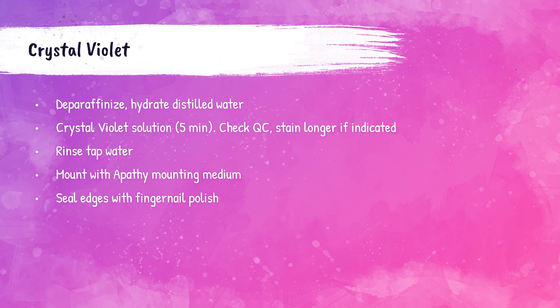To perform the crystal violet stain, tissue must be deparaffinized and hydrated in distilled water. Sections are then stained with crystal violet solution for five minutes. After this, check the QC slide to ensure it is properly stained — if it needs longer, additional staining can be done at that point. Then rinse sections in tap water and mount with Apathy mounting medium. The edges of the coverslip need to be sealed using fingernail polish.